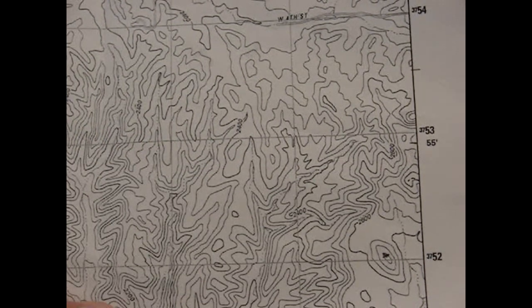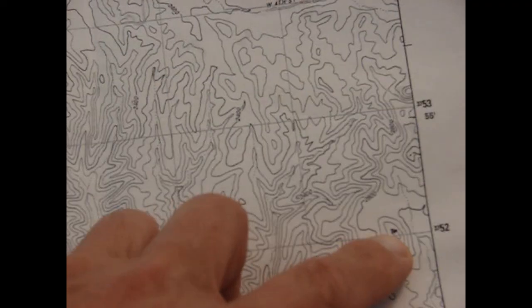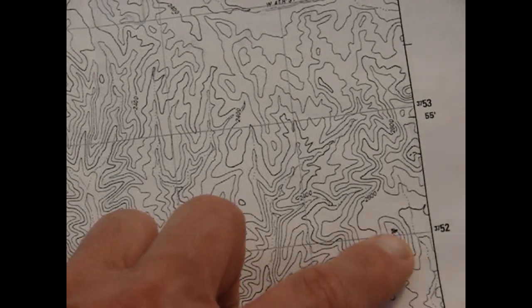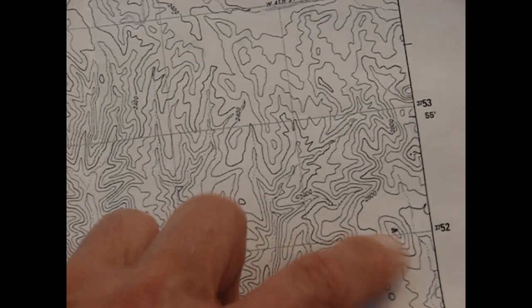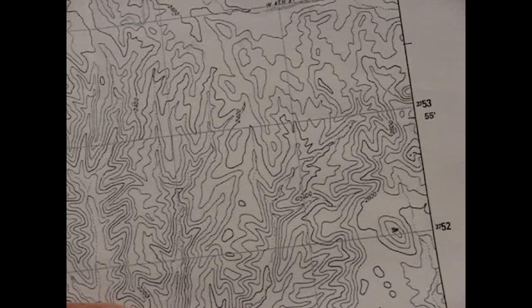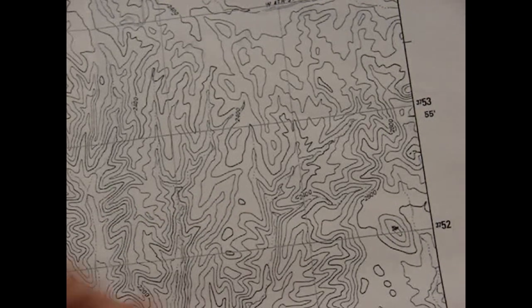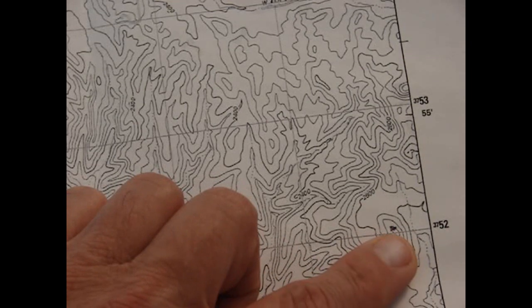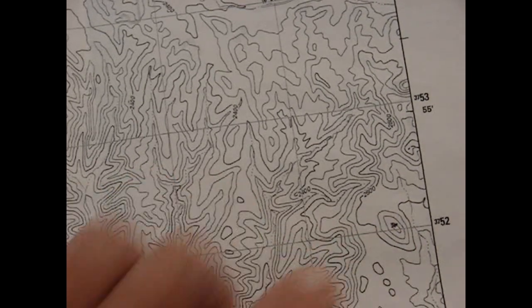Now I'm going to jump right to an eight-digit coordinate so we can get right on target with where this hill is and the very top of this hill. A six-digit coordinate will just get you within 100 meters. An eight-digit coordinate is going to get you within 10 meters of this target.